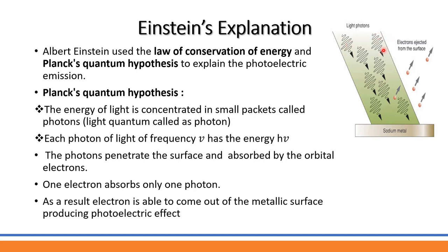Now, when light of frequency nu is incident on a metal surface, the radiation energy is given by h-nu. This energy comes in packets called photons. One photon is absorbed by one electron on the metal surface. The electron absorbs this h-nu energy, and using that energy, the electron will escape from the metal surface. This process is called the photoelectric effect.